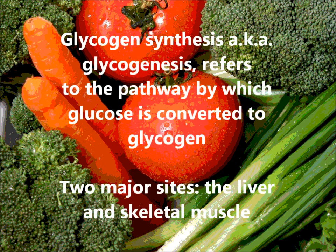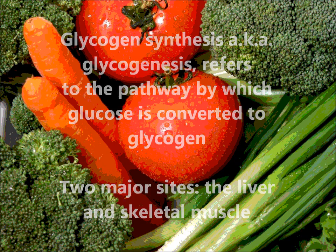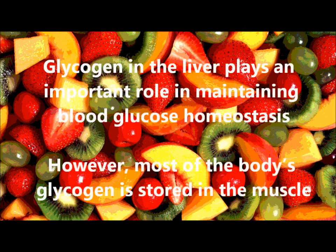Glycogen synthesis, also known as glycogenesis, refers to the pathway by which glucose is converted to glycogen. The two major sites for glycogen storage are the liver and skeletal muscle. Glycogen in the liver can be broken down to glucose and re-entered to the bloodstream, playing an important role in maintaining blood glucose homeostasis.